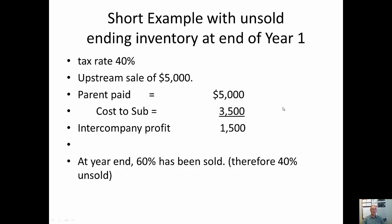Now we're going to look at the main type of example in this chapter — a case where the intercompany sale of inventory has happened in the year, but at the end of the year that inventory remains either fully or partially unsold to external parties. In this example, we have a tax rate of 40%, another upstream sale, a sale amount of $5,000, and the subsidiary paid $3,500 for this inventory — so we have a $1,500 intercompany profit. At year end, 60% has been sold and therefore 40% is unsold.